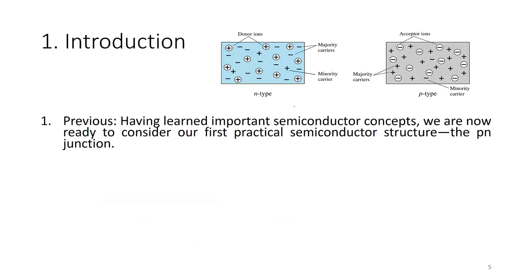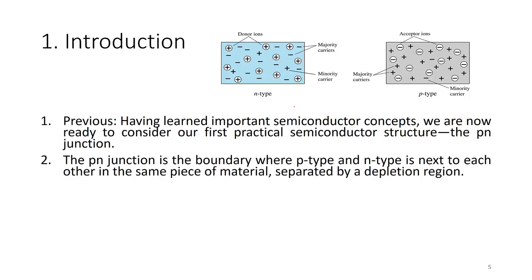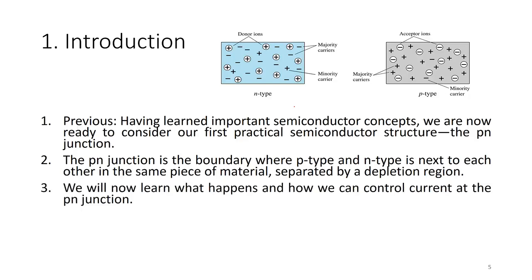For the introduction — N-type and P-type. In the previous lecture we learned the importance of semiconductor concepts. We are now ready to consider our first practical semiconductor structure: the PN Junction. The material can be P-type or N-type, and now we look at what happens when, in the same material, part of the structure is P-type and part is N-type. The PN Junction is the boundary where P-type and N-type are next to each other in the same piece of material.